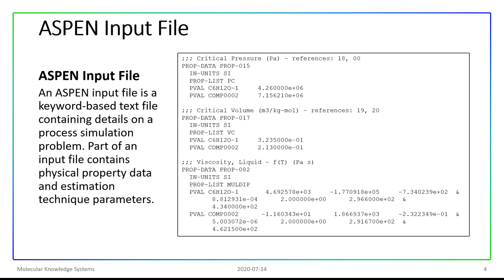An Aspen input file is a keyword-based text file that contains information on process parameters, equipment specifications, and physical properties. The part of the file that contains physical property data can contain data on constant properties, on temperature dependent properties, or on estimation technique parameters.